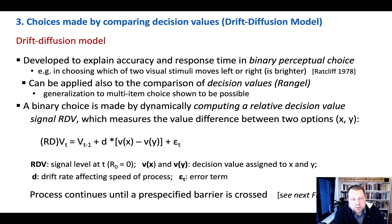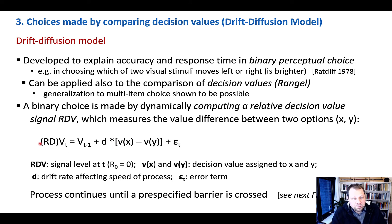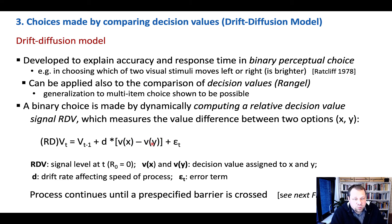Let's look at how the drift-diffusion model actually works and how it computes decision values. The important variable is the relative decision value. It's an iterative process applied to one decision — one trial — measuring the value difference between two choice options: option X and option Y, whose values we know from the pre-experiment.